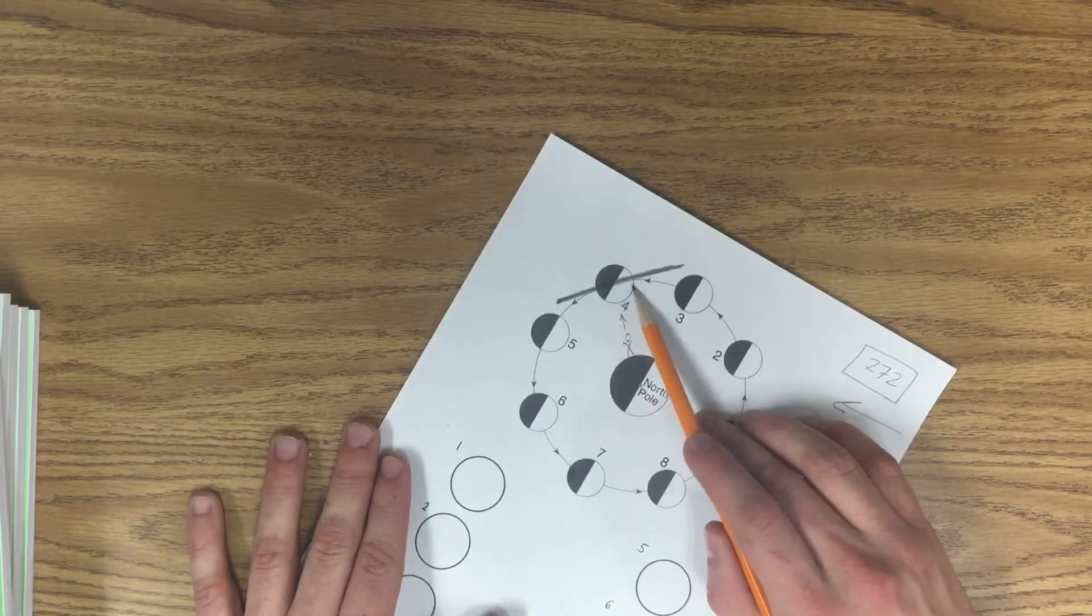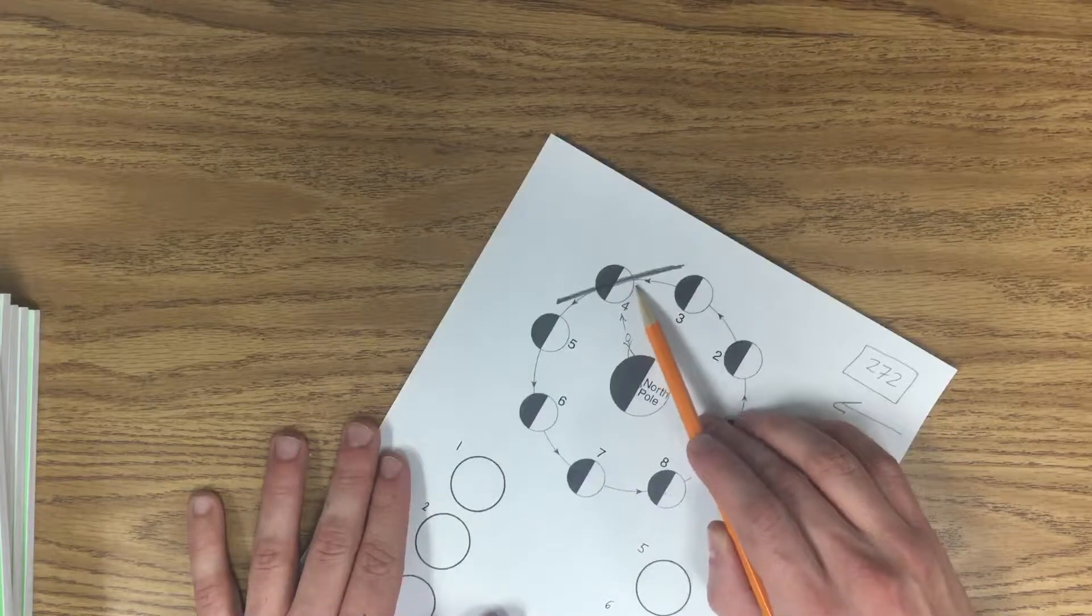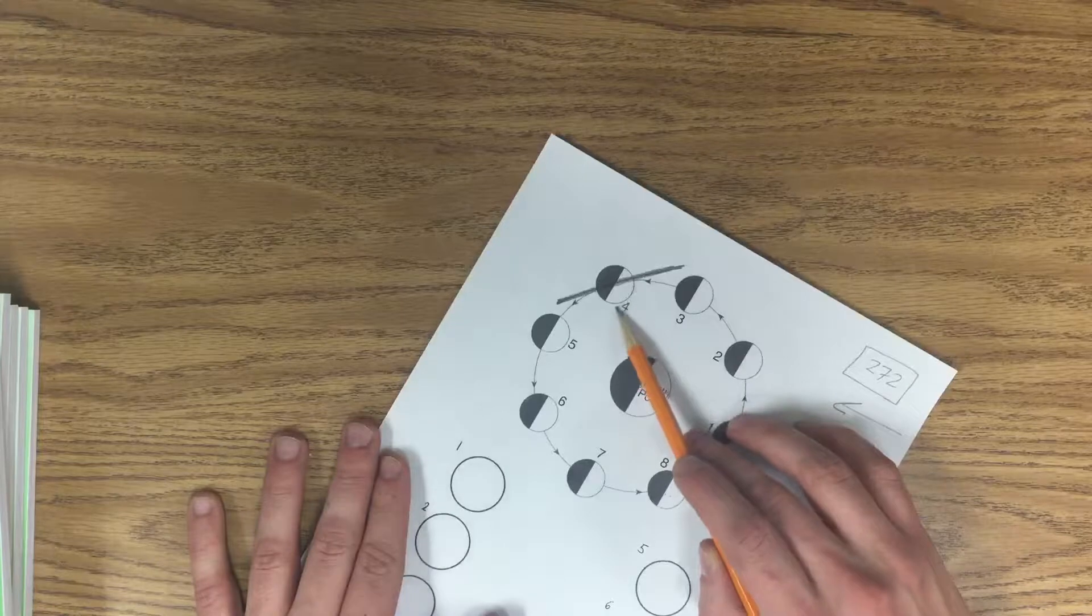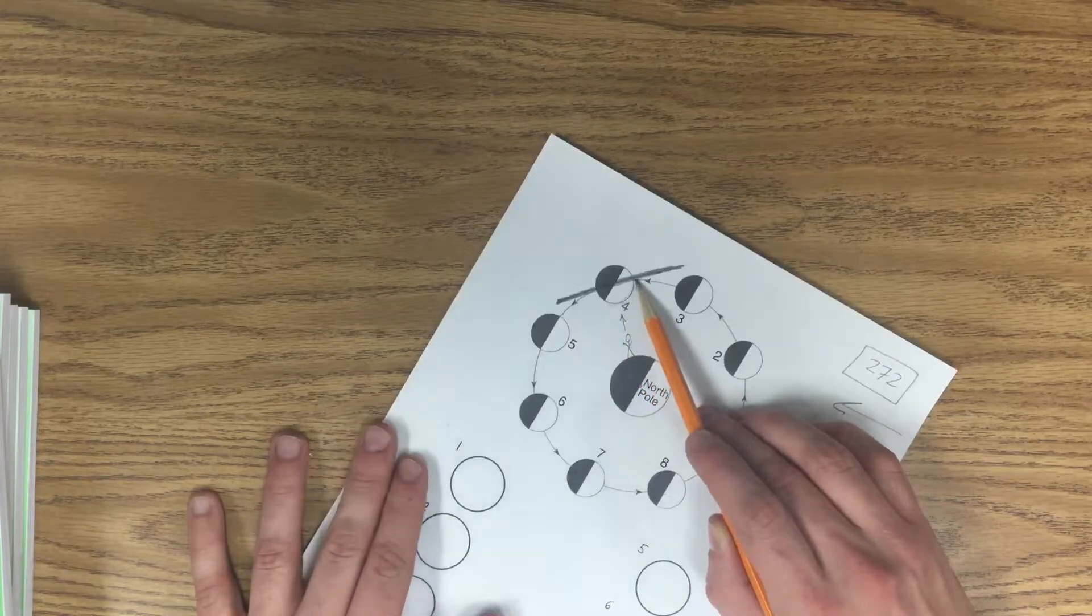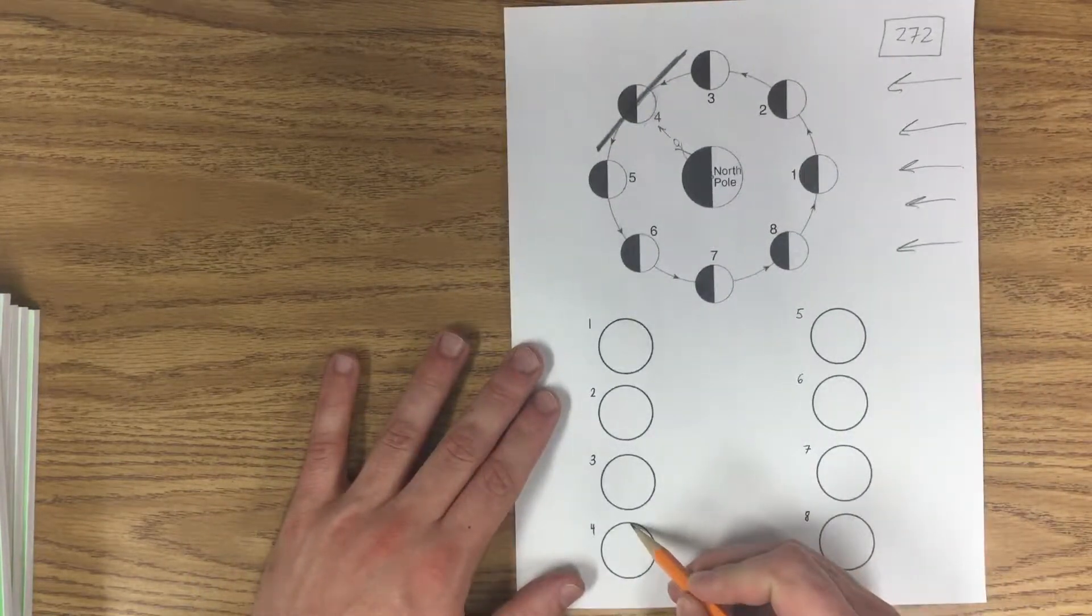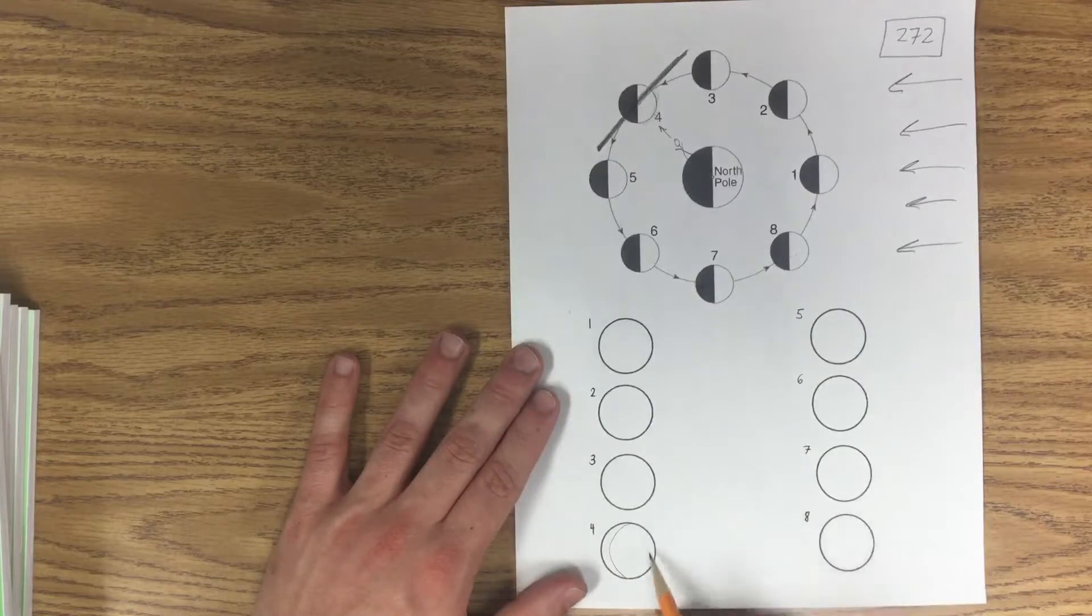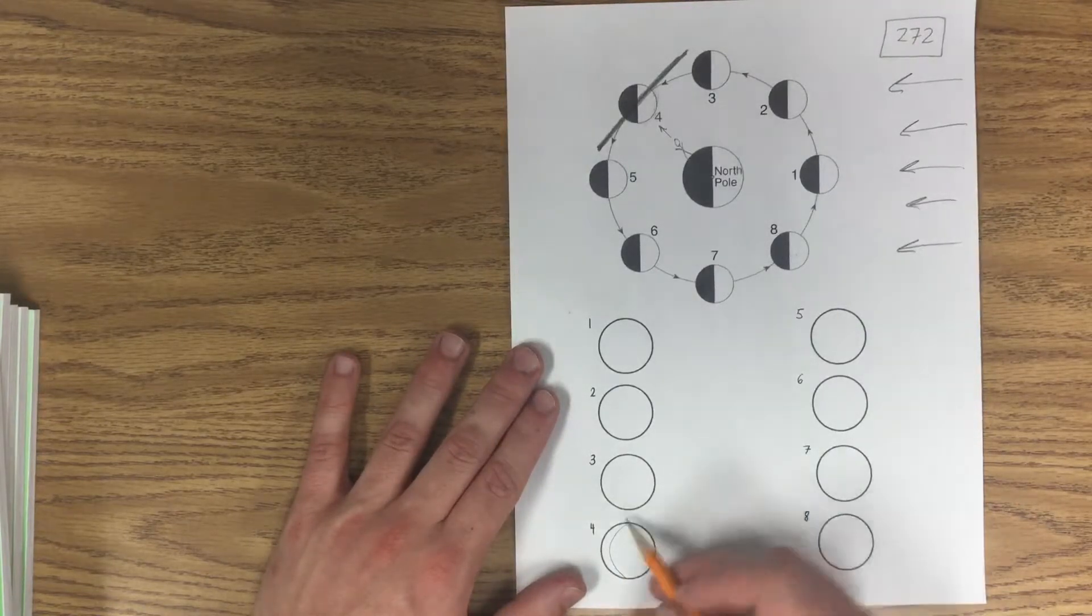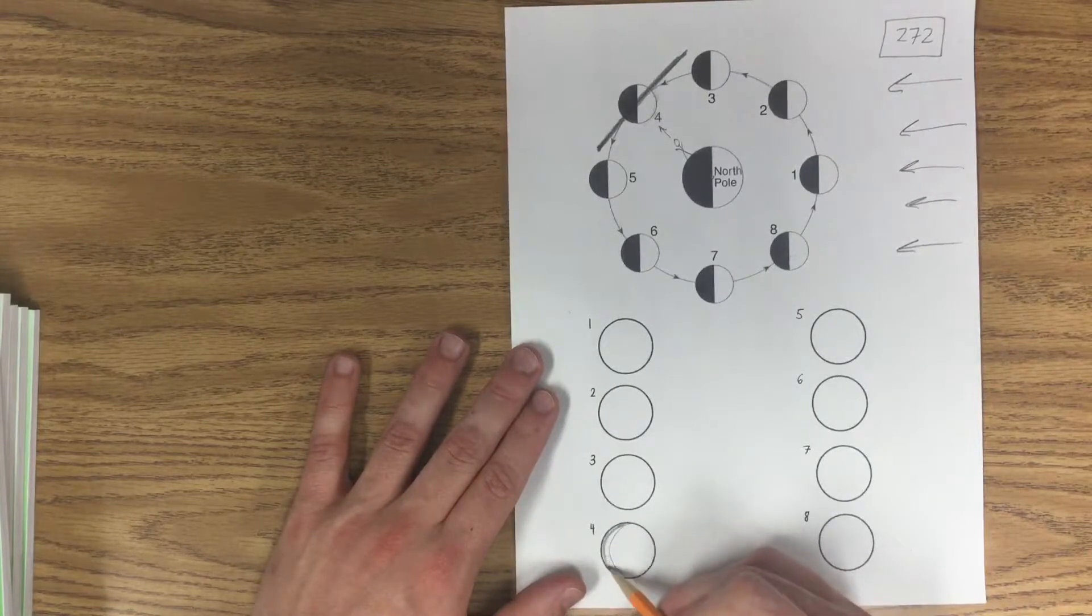Then I ask myself is it a quarter lit or less than half lit, is it half lit, or is it more than half lit? In this case it's more than half lit and the right side. So what I do, I make the left side dark and just a little bit. So now my right side is going to be lit and it's more than half, so I got to color in this little dark side.